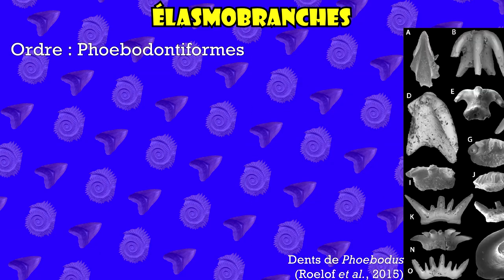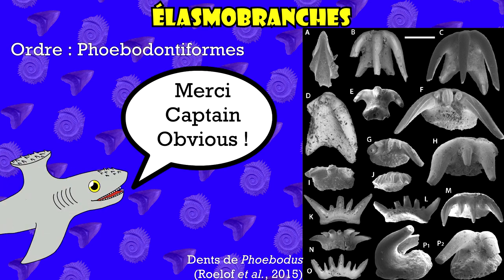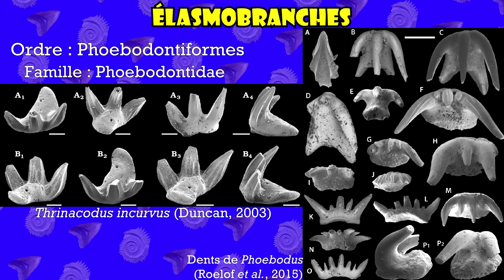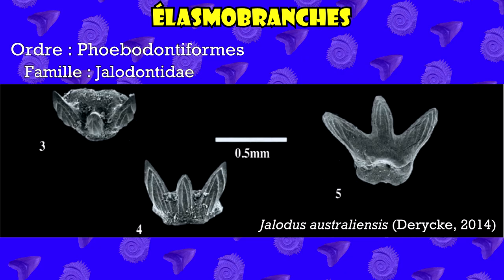Les dents de cet ordre sont dites tricuspides, car elles possèdent trois cuspides. Cet ordre est divisé en deux familles, les phébodontidées et les jalodontidées. La première comprend des genres tels que phébodus et trinacodus, dont les cuspides sont arrondies avec une serration légèrement marquée, et les deux latérales sont de la même taille que la médiane. La seconde famille a en son sein des genres tels que jalodus, possédant des dents tricuspides, striées verticalement, dont les cuspides peuvent être fusionnées à leur base.